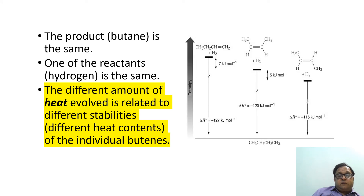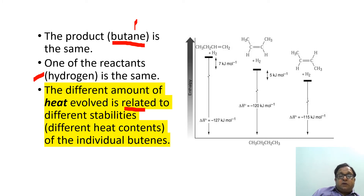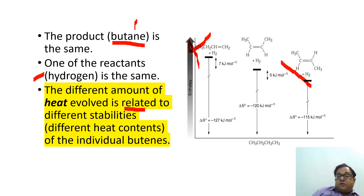This is the energy diagram for the heat of hydrogenation. The product is the same — butane — and one reactant, hydrogen, is also the same. The difference is the amount of heat evolved, which is related to the different stabilities. In this diagram, the 1-butene molecule is at the top with the highest energy, and trans-2-butene is at the lowest position with the least energy.